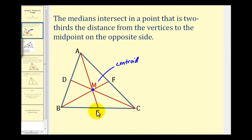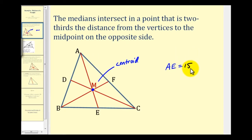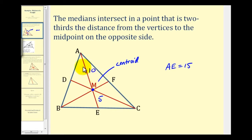If we look at median AE, this theorem tells us the length of AM is two-thirds the length of the entire median AE. So if AE equals fifteen units, two-thirds of fifteen would be ten, and the shorter segment would be five units. The shorter segment is always going to be half the length of the longer segment making up the median, or the longer segment would be twice the length of the shorter segment.